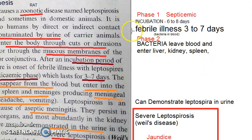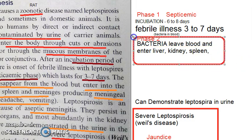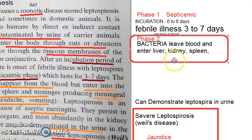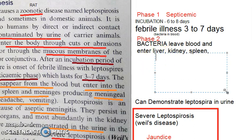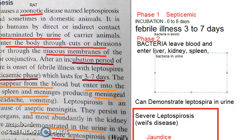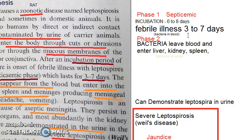After these seven days of fever, the bacteria will leave the blood and enter organs like the liver, kidney, and spleen. This is when the bacteria can be detected in urine. So based on this, you collect samples accordingly — in the first week of illness, you collect blood.